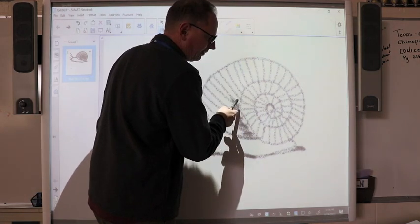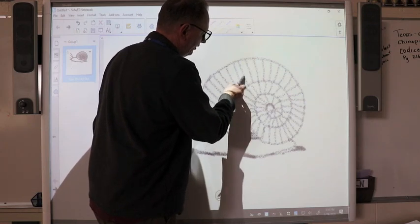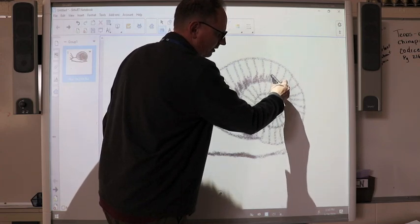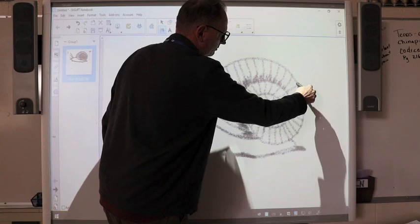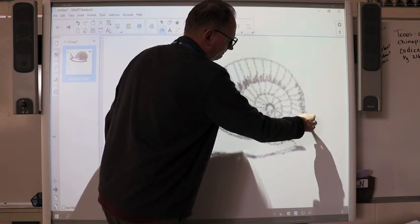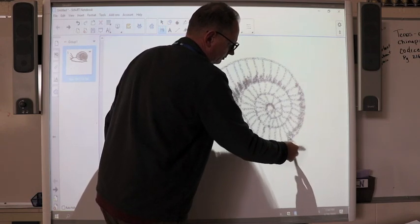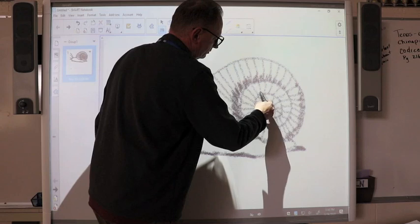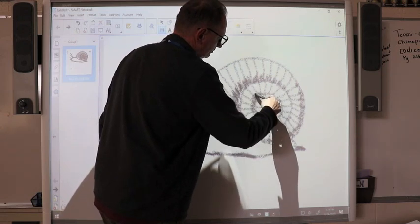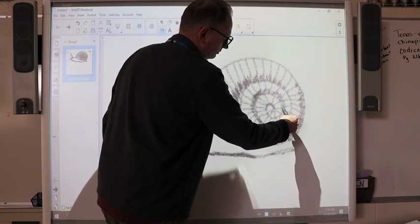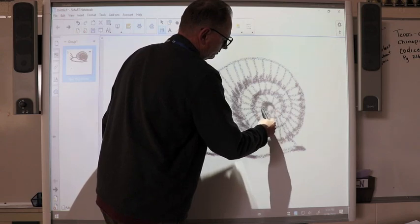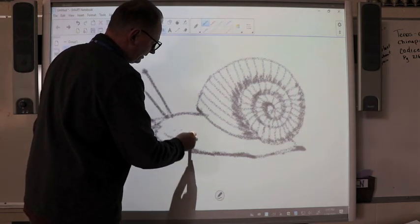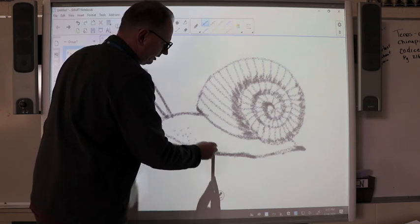We're really going to get into shading in the next drawings. But for this one, we're going to start off slowly with a snail. I'm just going to add some shading right on this side. You can also add a few little dots. Give it a little bit of texture.